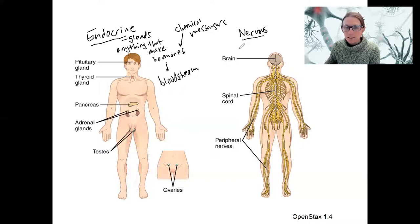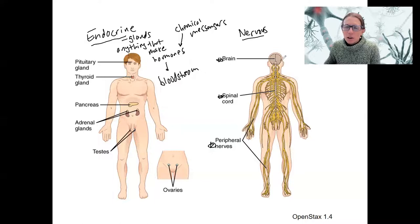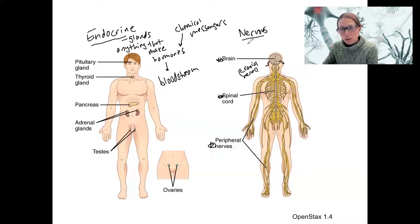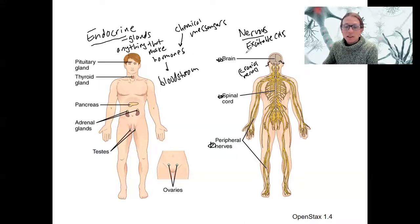The nervous system is the brain, the spinal cord, and the peripheral nerves. There are also peripheral nerves that come from the brain — they're cranial nerves, a type of peripheral nerve. This system involves excitable cells, just like muscle tissue. And this is going to be local or directed communication via action potentials that then allow for synaptic communication.